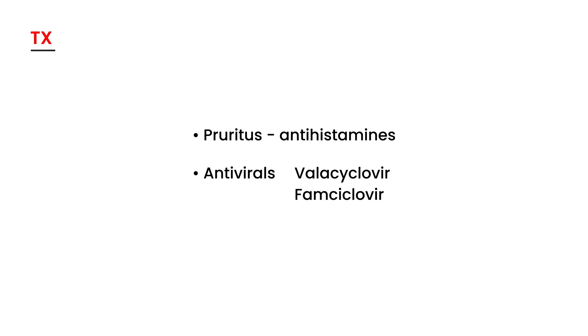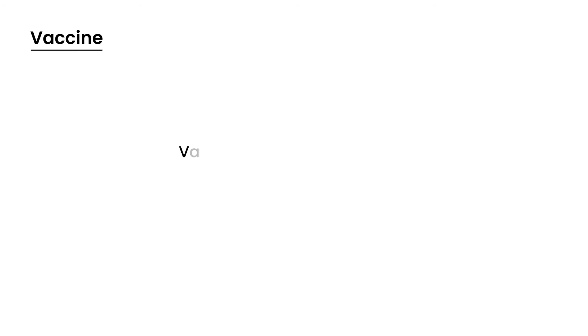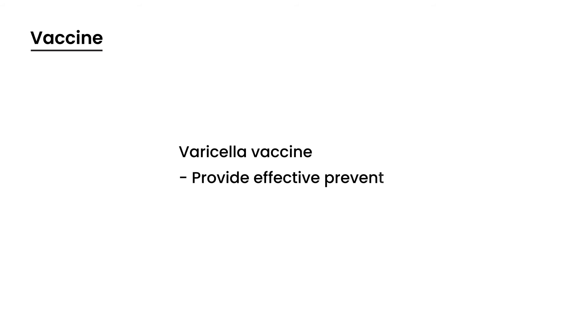Pruritus is treated with antihistamines. This not only relieves symptoms but also helps prevent secondary bacterial infection that can happen when a person itches profusely. Finally, there is a vaccine called the varicella vaccine, which provides effective prevention of this condition.